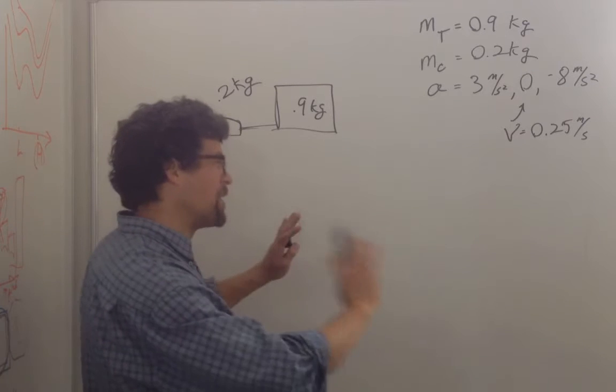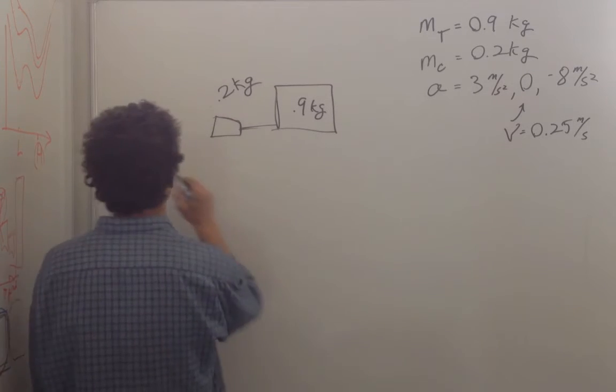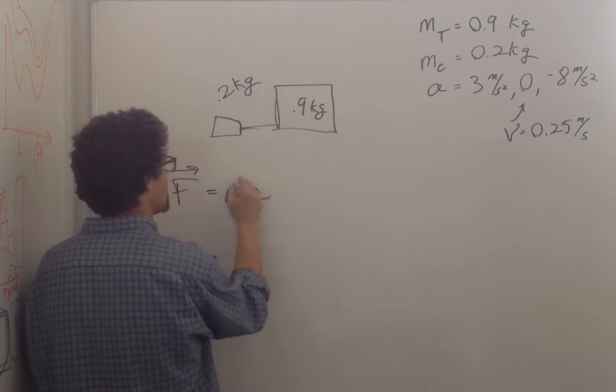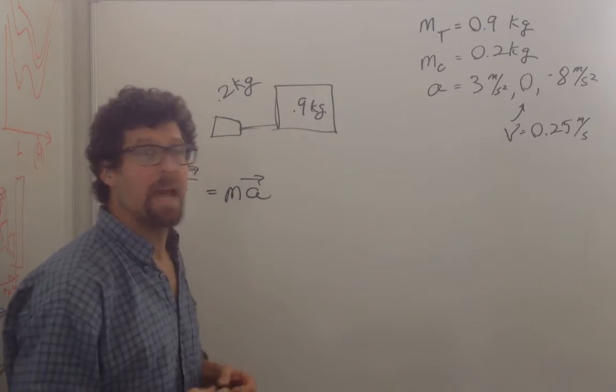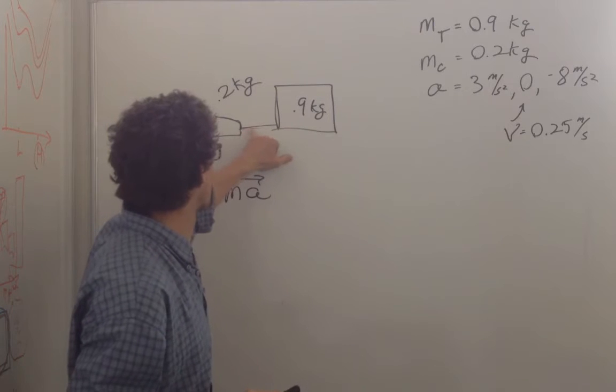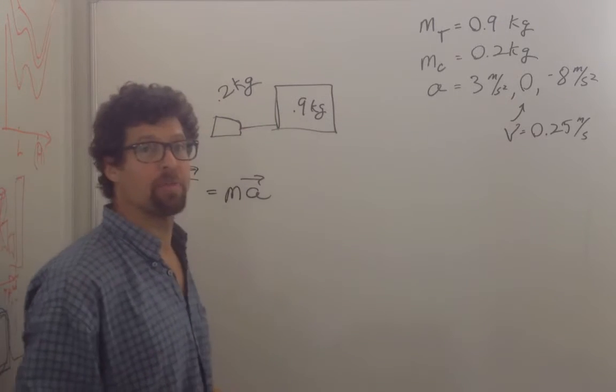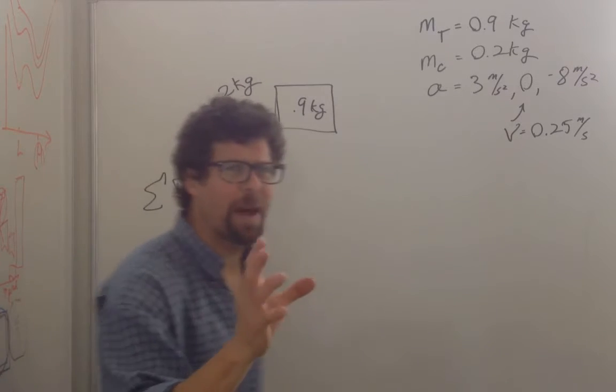My first step is I know that there's only one formula that can work, and that's the vector sum of the forces on a body is equal to mass times acceleration of the body. We're looking at this force right here is what we want to know, and we know the acceleration of both these bodies.